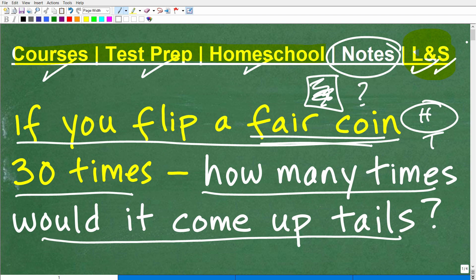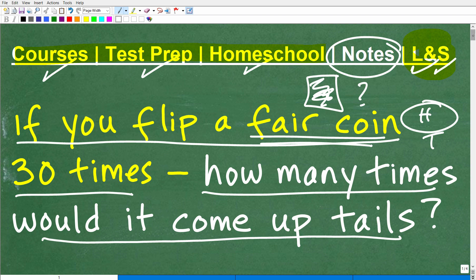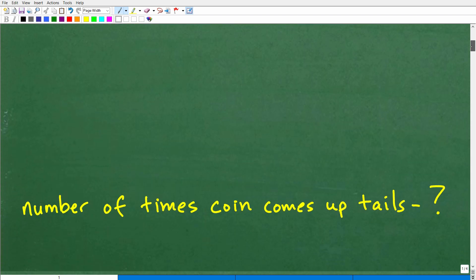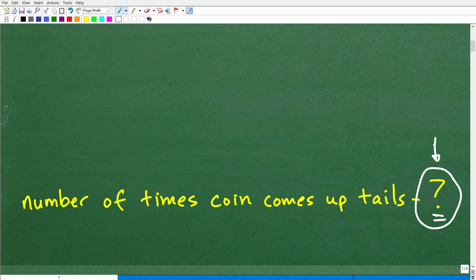Okay, so let's take a look at the answer. We're going to flip this fair coin 30 times. How many times would it come up tails? Well, the answer is, I don't know. The number of times it comes up tails is, well, that all depends. There is no answer. There is no precise answer. And just think about it.